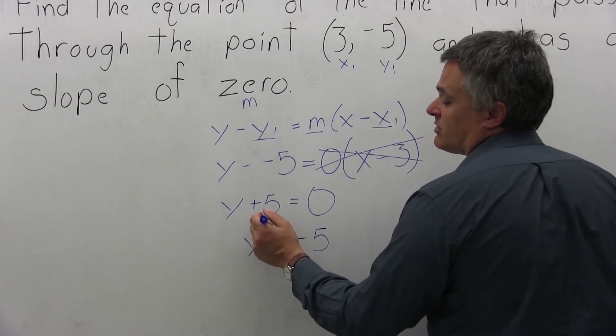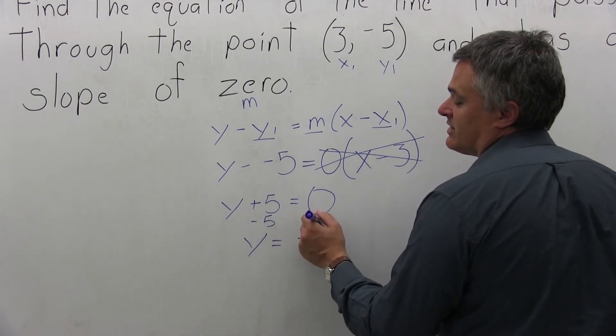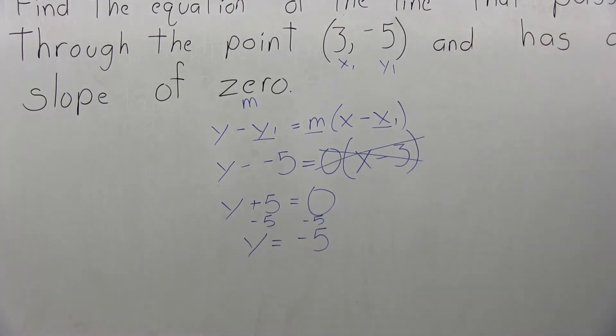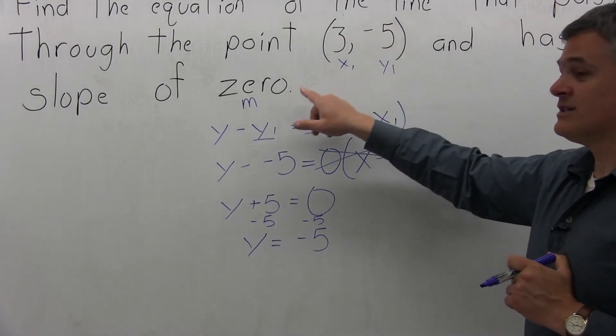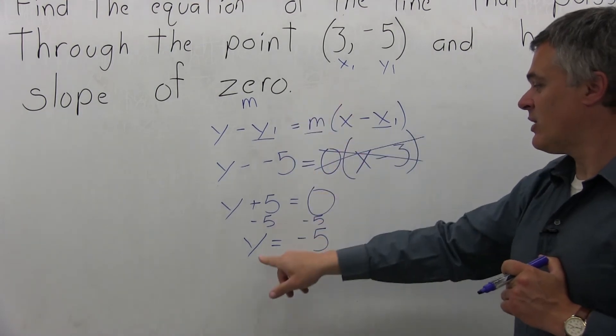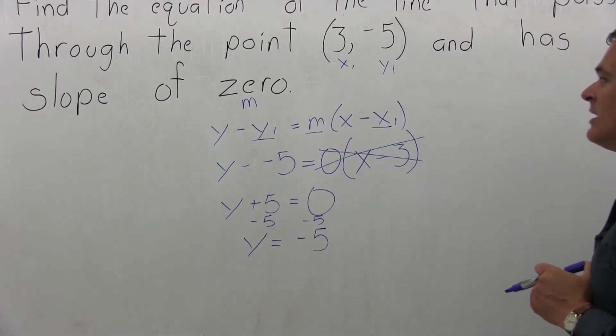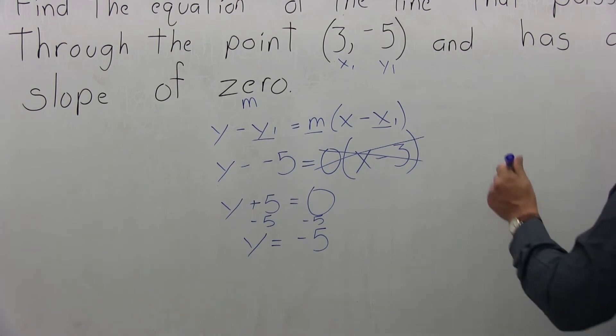Or you can figure that you subtracted 5 from both sides of the equation. Now, that's one method of finding the equation of the line that passes through the point (3, -5) and has a slope of 0. You get y equals negative 5 as your final answer.